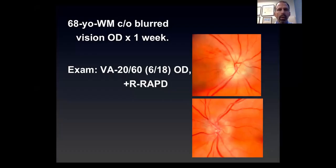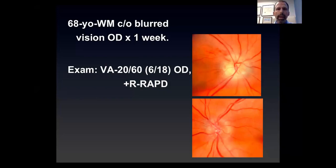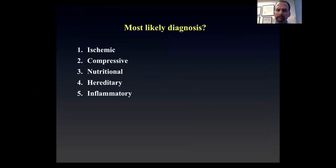I'm going to start with this case. A 68-year-old gentleman complained of blurred vision in the right eye for the past week. It was fairly sudden and painless in onset. His vision is 20/60 or 6/18 in the right eye, normal in the left, and he has a right relative afferent pupillary defect. The question is: given that scenario and the appearance of those optic nerves, what is the most likely diagnosis — ischemic, compressive, nutritional, hereditary, or inflammatory?